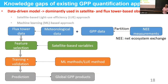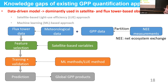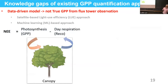Next I will discuss data-driven models dominantly used in satellite and flux tower-based observations. There are two major approaches: the light-use efficiency (LUE) approach and the machine learning-based approach. Input data are usually from flux towers, meteorological data, or GPP data. However, GPP cannot be measured directly beyond the leaf scale by sensors, so GPP is derived from Net Ecosystem Exchange (NEE) measured at the flux tower. This model selects satellite-based variables as global features, trains and validates using different machine learning and LUE methods, and outputs a predicted global GPP product.